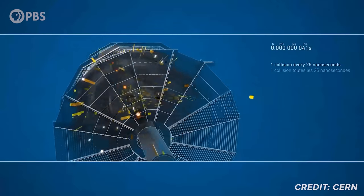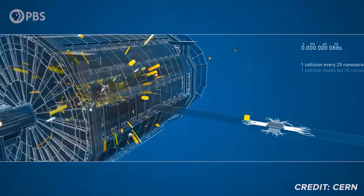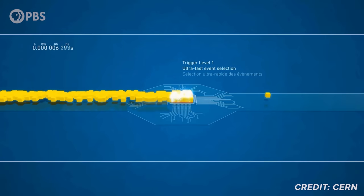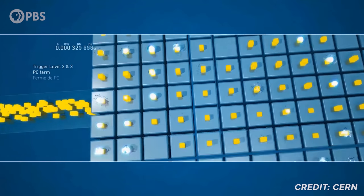That was a 3 point something sigma detection. More data was collected and the bump went away. It really was just a random statistical fluctuation.